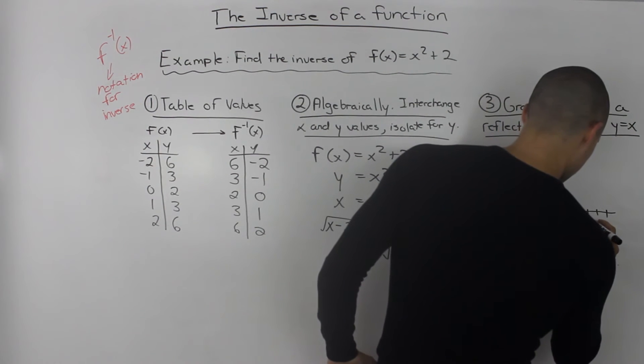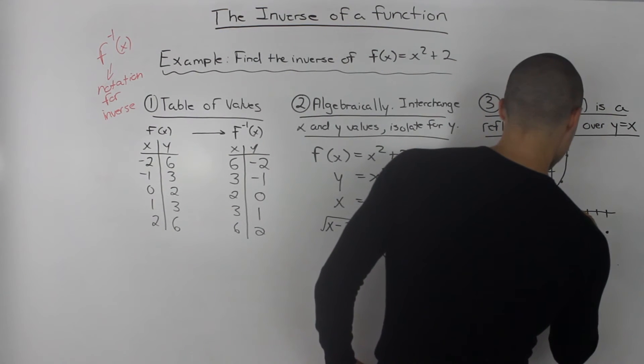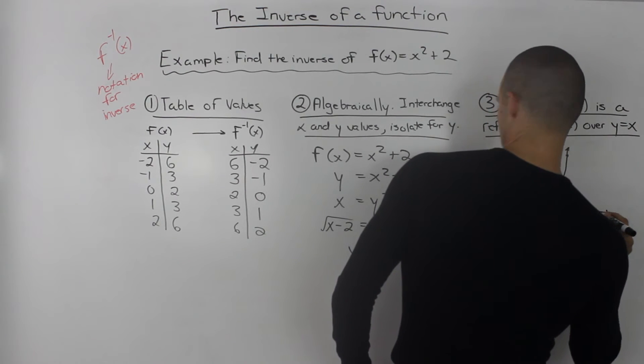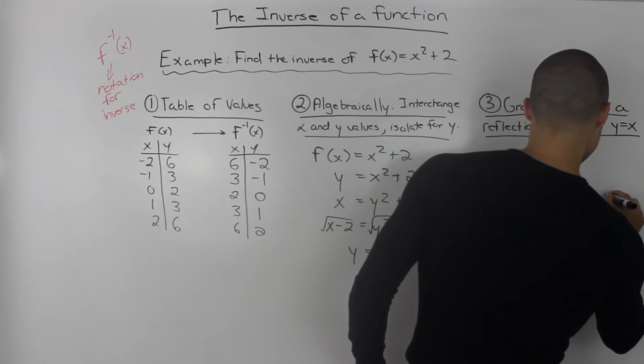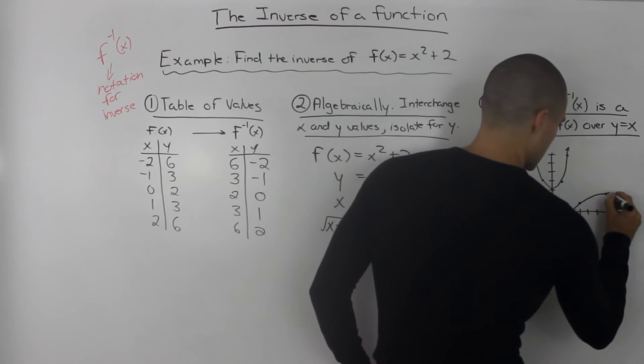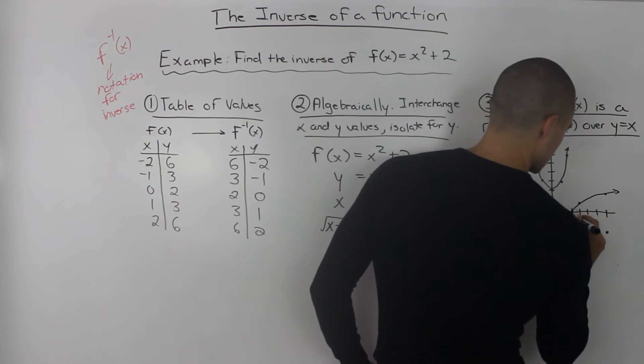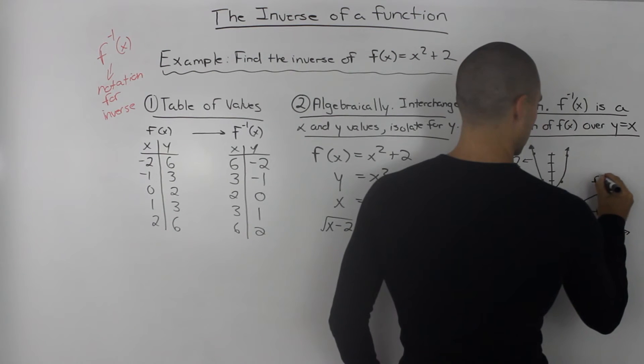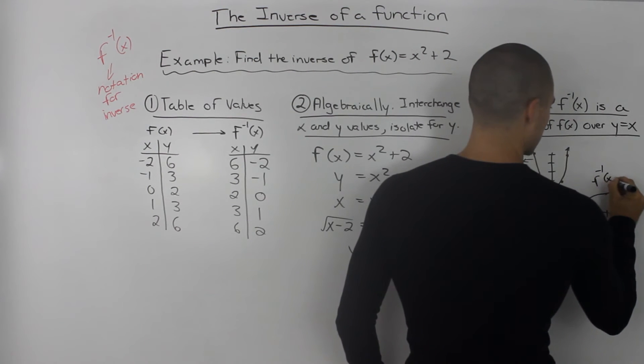So now let's plot the points of the inverse. So 6 and -2 would be here, 3 and -1 would be here, 2 and 0 would be here, 3 and 1 would be here, and then we got 6 and 2. So this would look something like this. And this represents our inverse graph, f^(-1)(x).